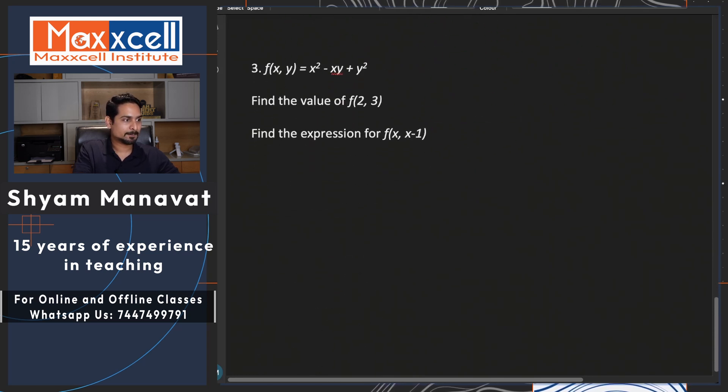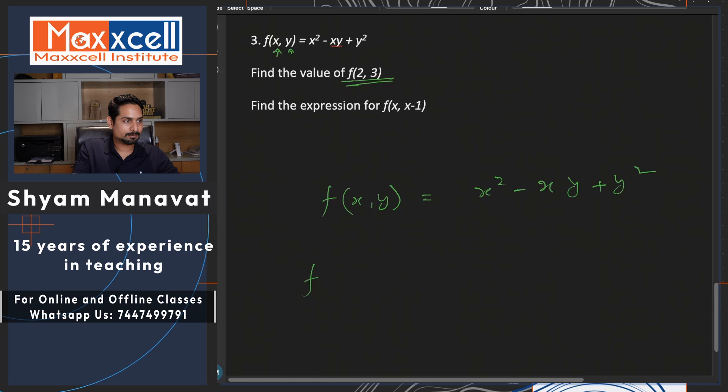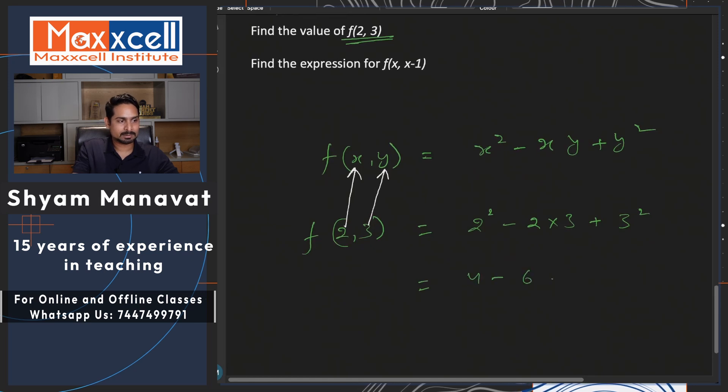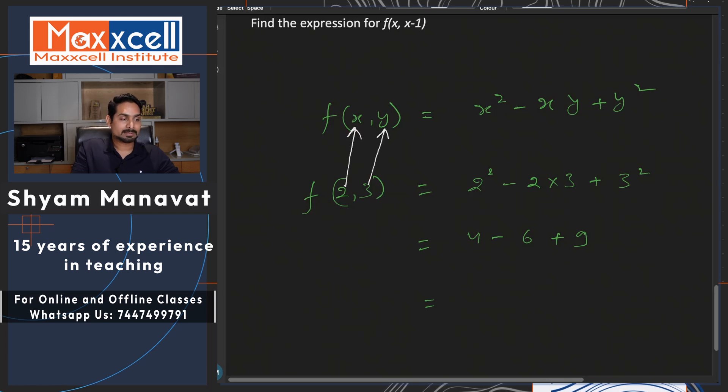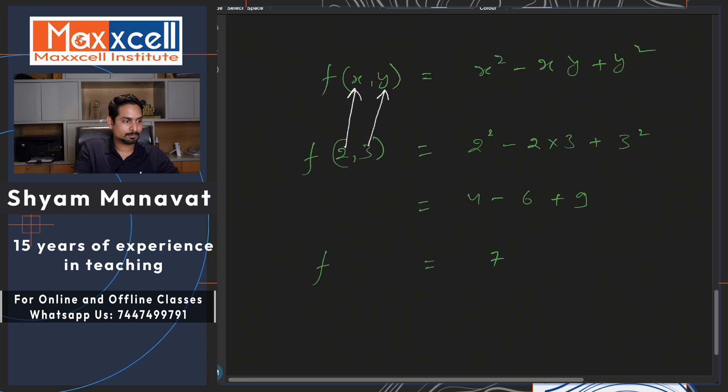Let us try one more. Now this time we got two variables, two variables as input. That is fine, don't worry, that is completely fine. So f of x comma y and we need to find out f of 2 comma 3. f(x,y) is equal to x square minus x into y plus y square. Now if I want to find out f of 2 comma 3, you know I need to substitute x as 2 and y as 3. Simplify that further, 4 minus 6 plus 9, 13 minus 6 will be 7. That is f of 2 comma 3. No struggle, right. Simple.